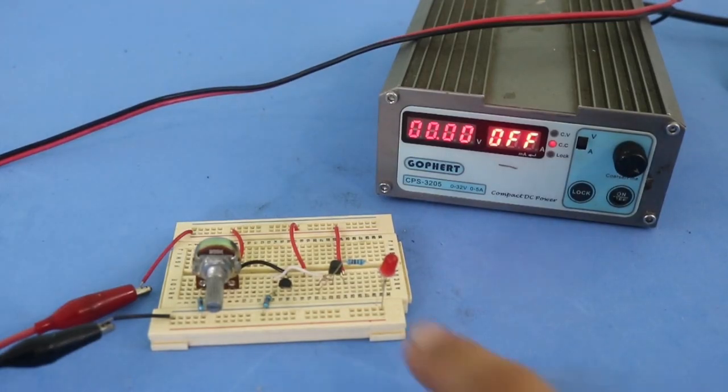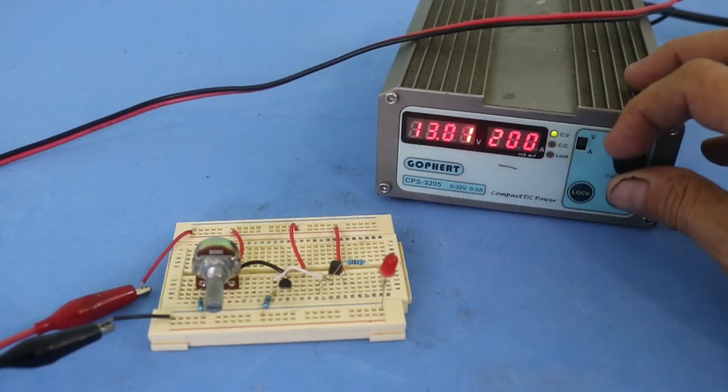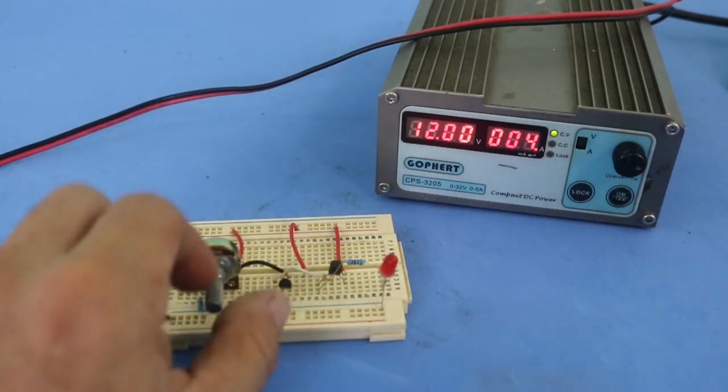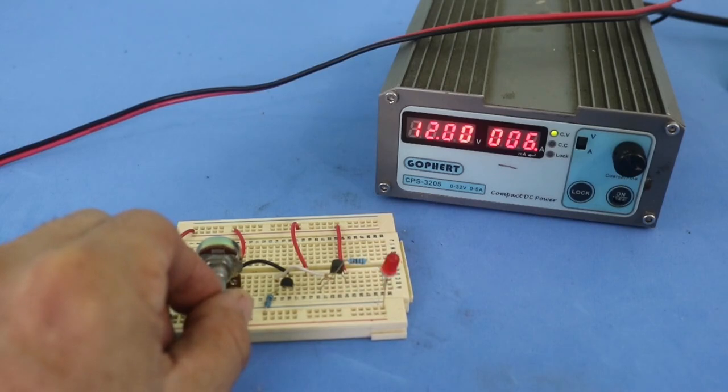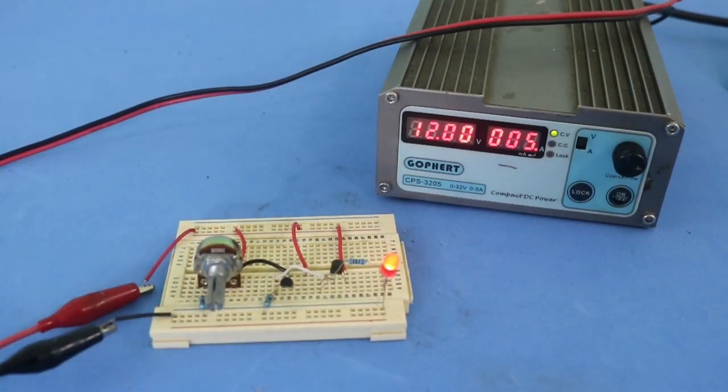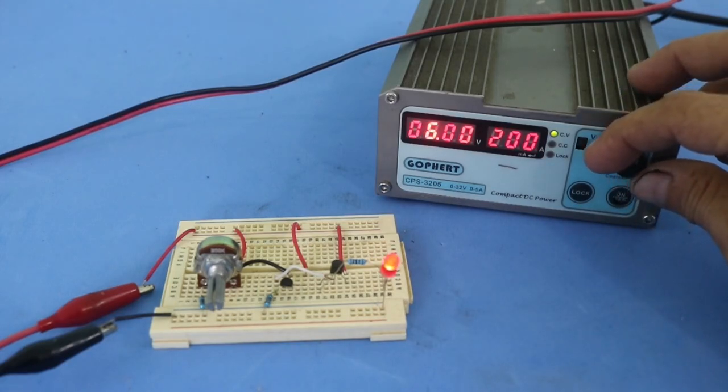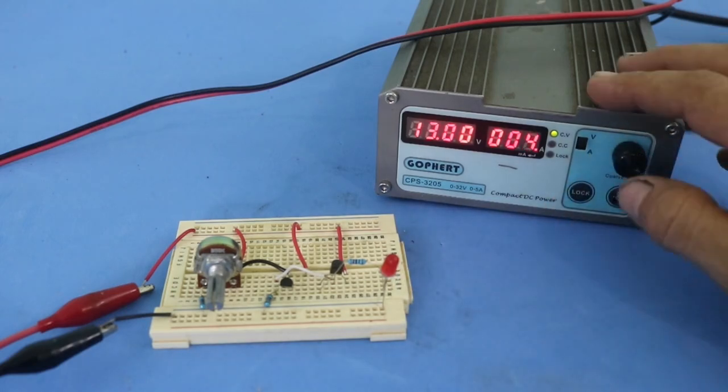Suppose that you want your LED to turn off at 12 volts. You turn on your power supply and select 12 volts and then move your potentiometer until the LED is on. Then if the voltage is less than 12 volts, the LED remains on, but as soon as the voltage is higher than 12 volts, your LED will turn off.